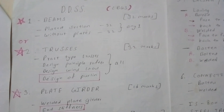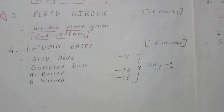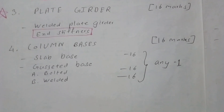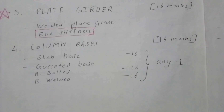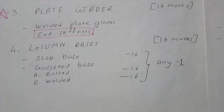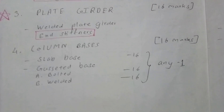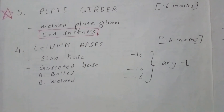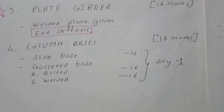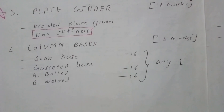If you have time and want more marks as a safety buffer, the next easy topic is Column Bases. Three different types of numericals may be asked: slab base (always bolted connection), gusseted base with bolted connection, and gusseted base with welded connection. The final steps differ between connection types, but the rest of the steps are the same. Only one sum from these three will be asked for 16 marks.